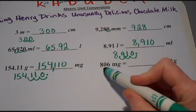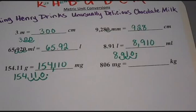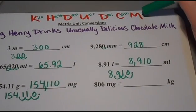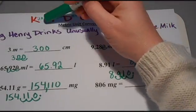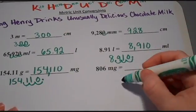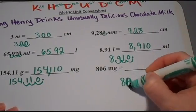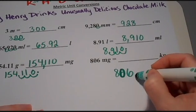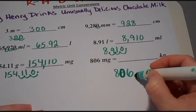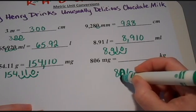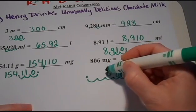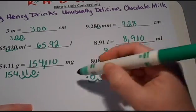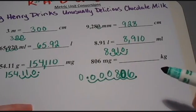For this one, we've got 806 milligrams and I need to change that all the way over to kilograms. I start with my milligrams and count all the way over to kilo — that's one, two, three, four, five, six spaces to the left. My decimal starts right after 806, and I move it six spaces to the left. I have three empty spaces that I need to fill in with zeros, so my decimal goes right there.